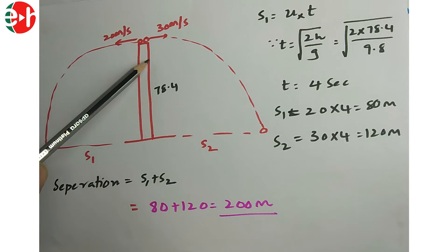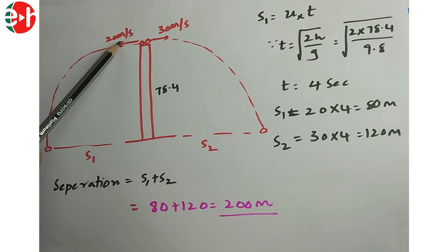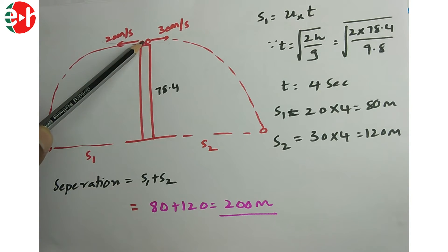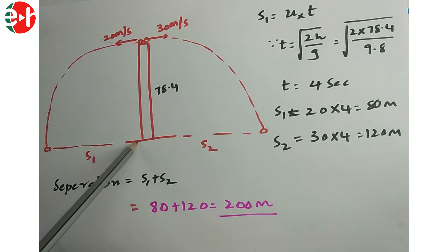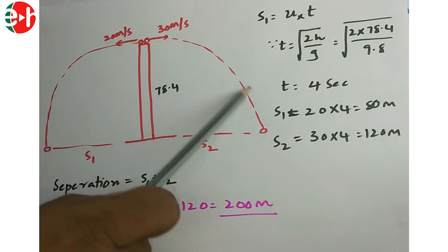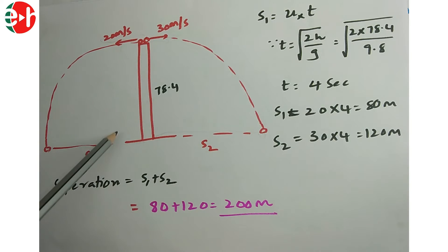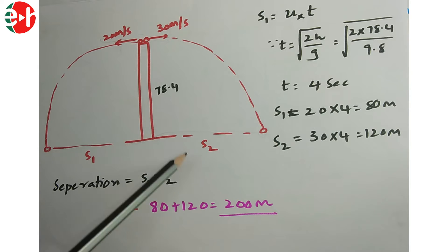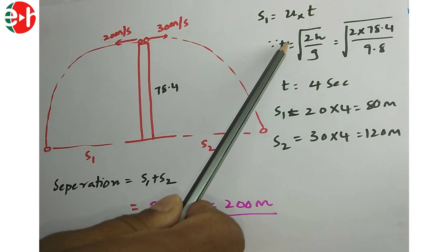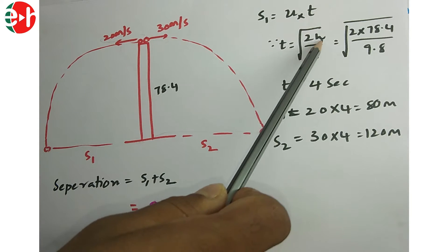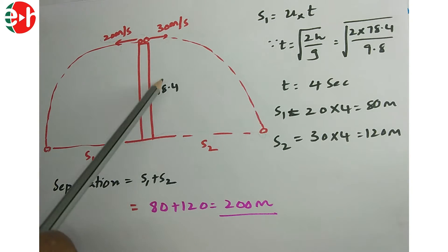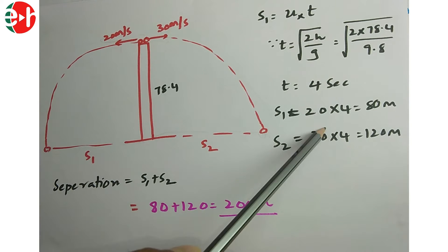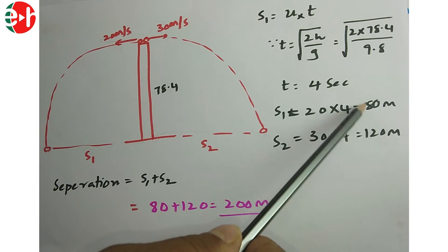Two stones from the top of a tower of height 78.4 m are thrown in opposite directions — one at 20 m/s and another at 30 m/s. Time of flight: t = √(2H/g) = √(2×78.4/9.8) = 4 seconds. Range s1 = 20×4 = 80 m, range s2 = 30×4 = 120 m. Total separation = 80 + 120 = 200 meters.